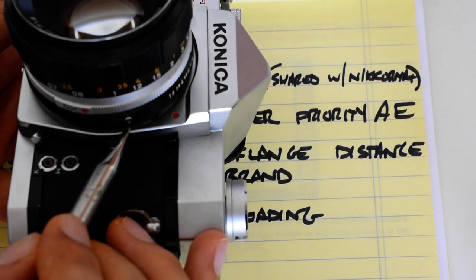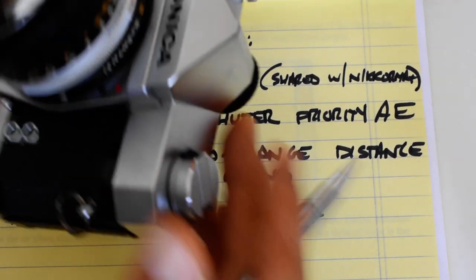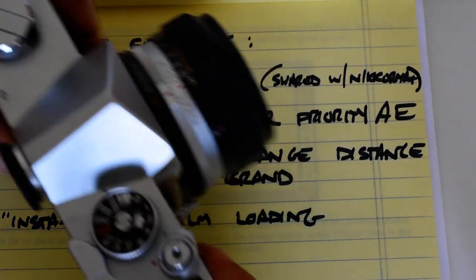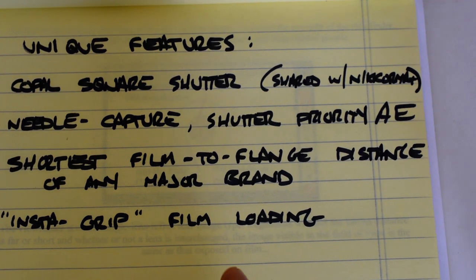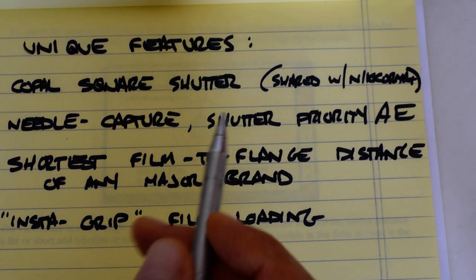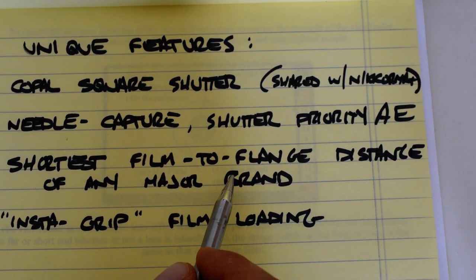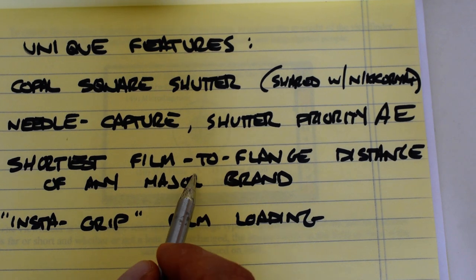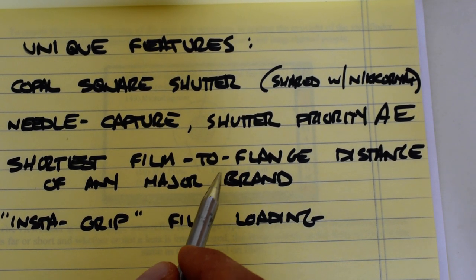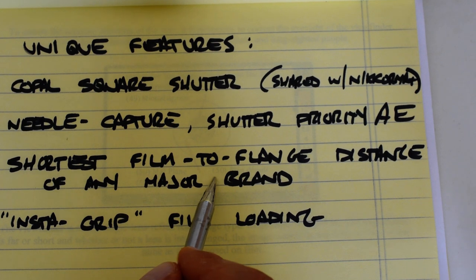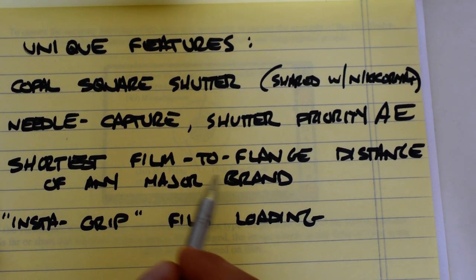Film-to-flange simply means the distance between the flange, which would be this part here, and the film plane. The distance between that and your film plane on a Konica is much shorter than other SLRs of the period. I know that Konica made an M42 adapter, so you can get Konica factory-made M42 adapters to let you mount M42 lenses onto your Autoreflex. I believe there are other adapters available for other brands. They're not particularly common or easy to find, but if you run across them, just buy one. I'd love to have an M42 and I haven't found one yet.